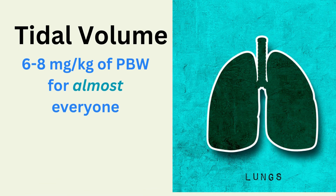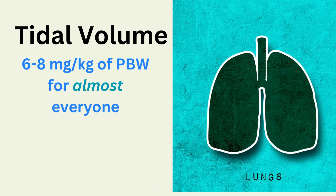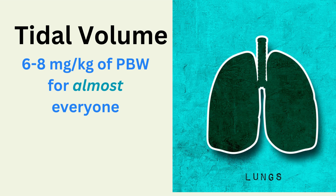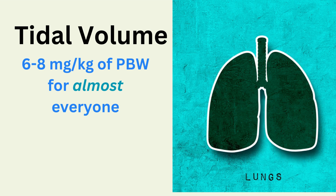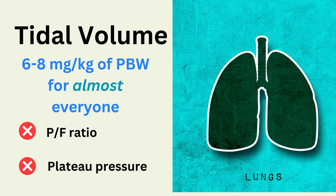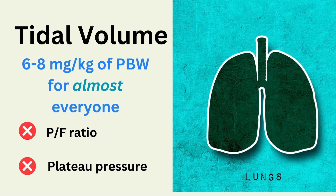Six to eight mLs per kilogram of predicted body weight is the recommended initial setting. There are occasions where you may use four to six mLs per kilogram, but because the patient has not been on the ventilator yet, we won't have evidence of stiff lungs, a P/F ratio, or plateau pressure. So typically six to eight mLs per kilogram of predicted body weight is your starting point.